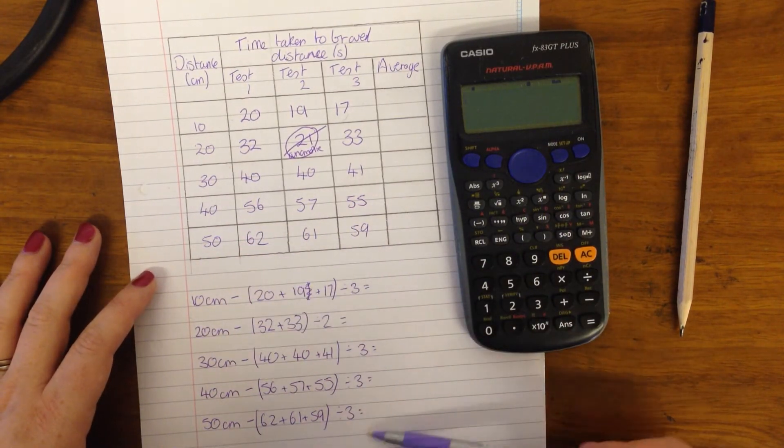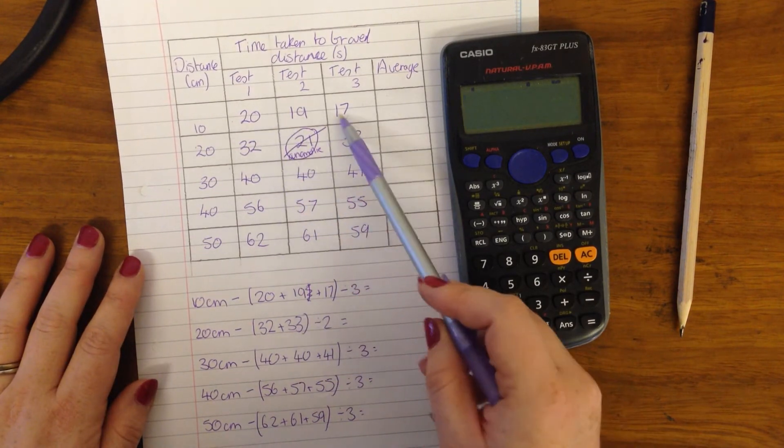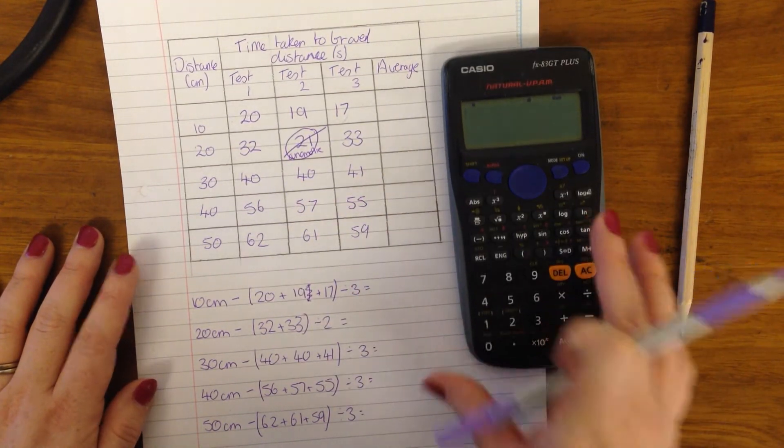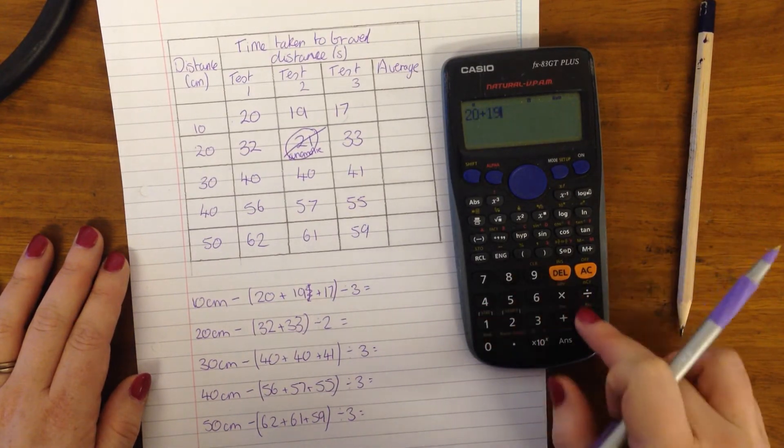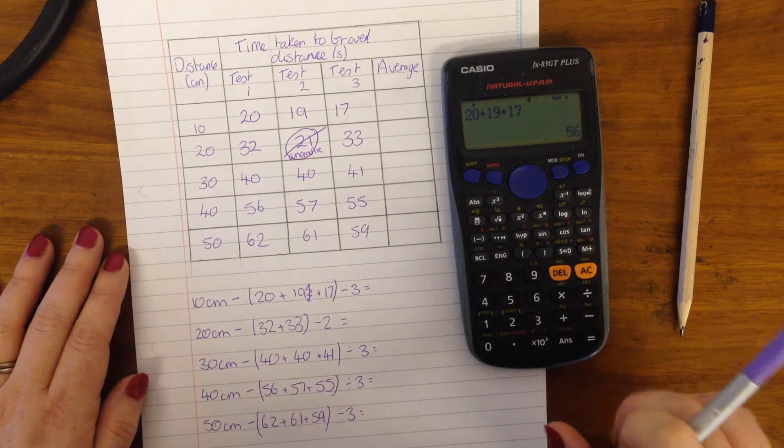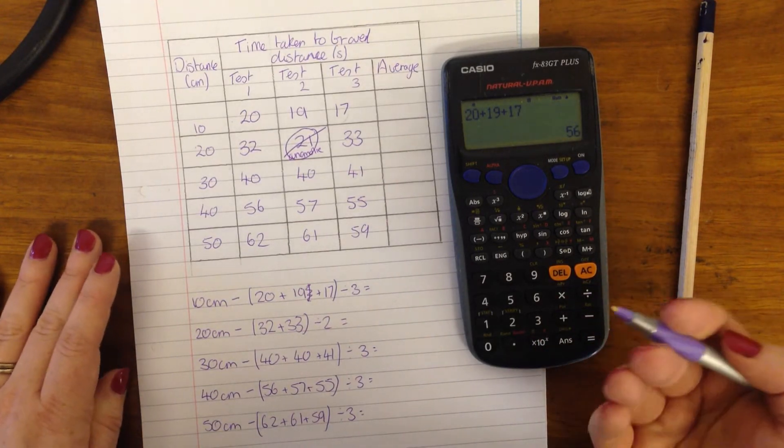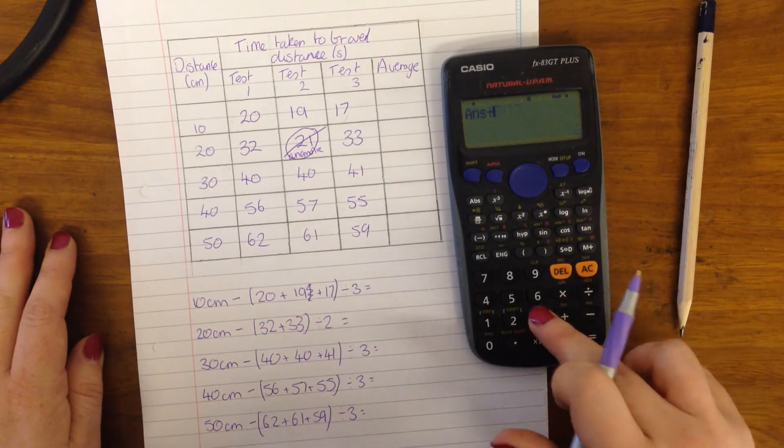So I've written the sums that we need to do down here. We need to add these numbers and then divide them by the number of numbers that we have. So 20 plus 19 plus 17. And when you're doing this in a calculator, always place equals after you've done the sum.